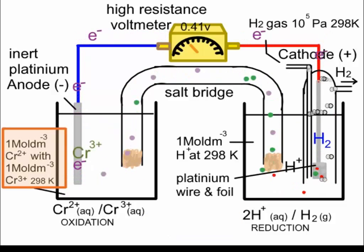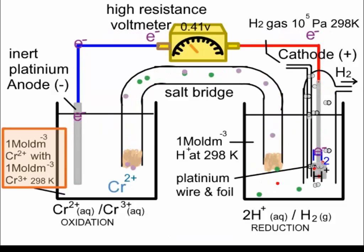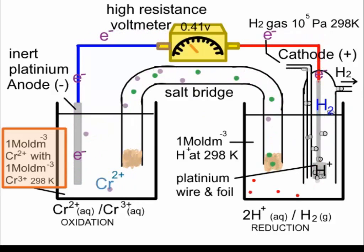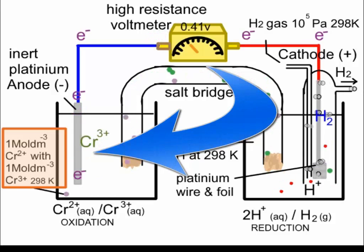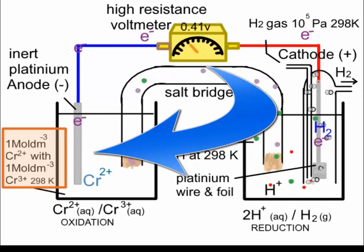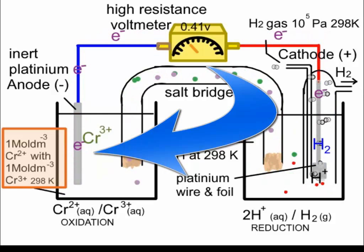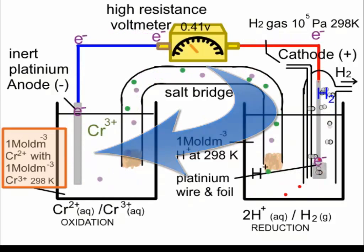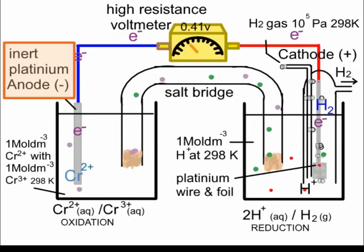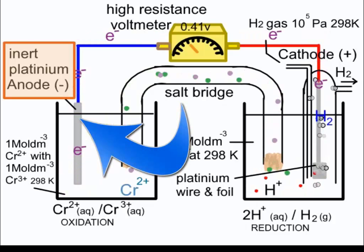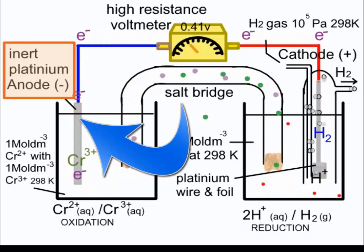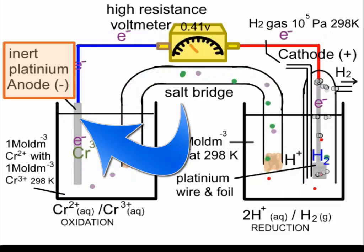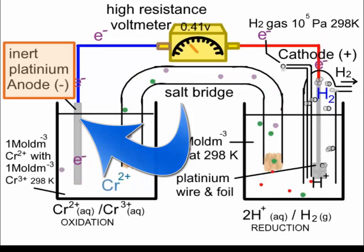In order to use the standard E-theta values or reduction potentials, the galvanic cell must comply with standard conditions. The solution in the beaker on the left is one mole per cubic decimetre with respect to Cr2+ and Cr3+, and is at a temperature of 298 K. As neither of these oxidation states of chromium is a metal, we need to use an inert metal to conduct electrons in and out of the solution.